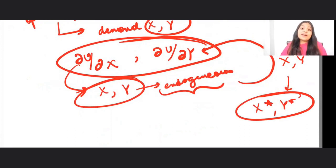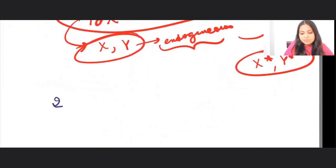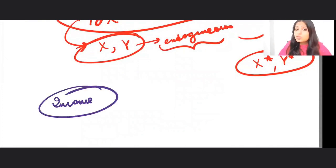Now, think of the factors that are constant, that are not determined within your model. What can be those factors? Well, those factors can be factors like income. So, the income of the individual, that is something which is taken as constant, that is determined outside the model.